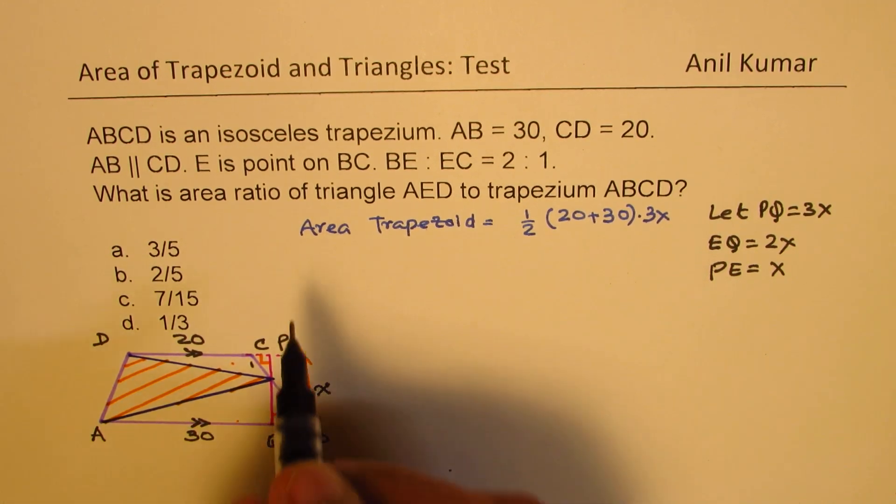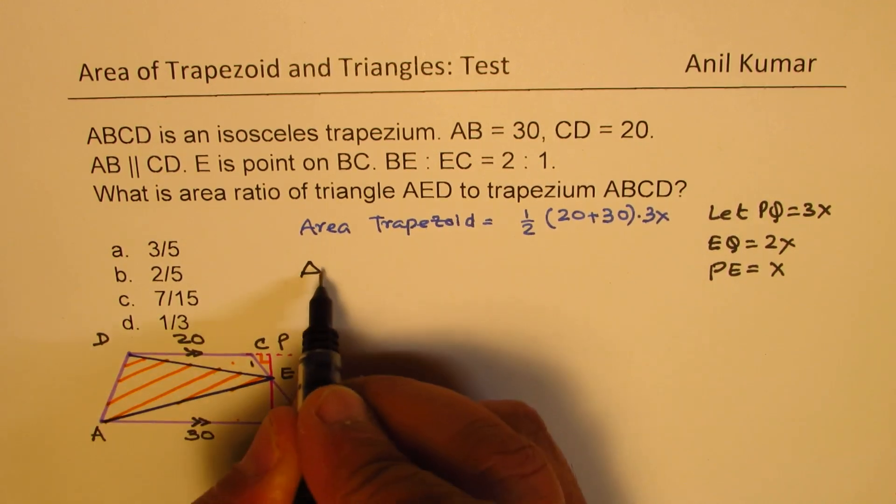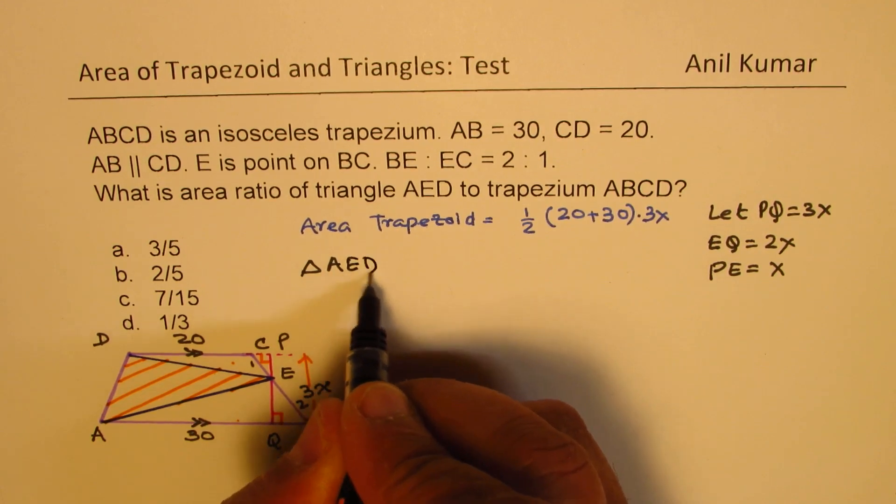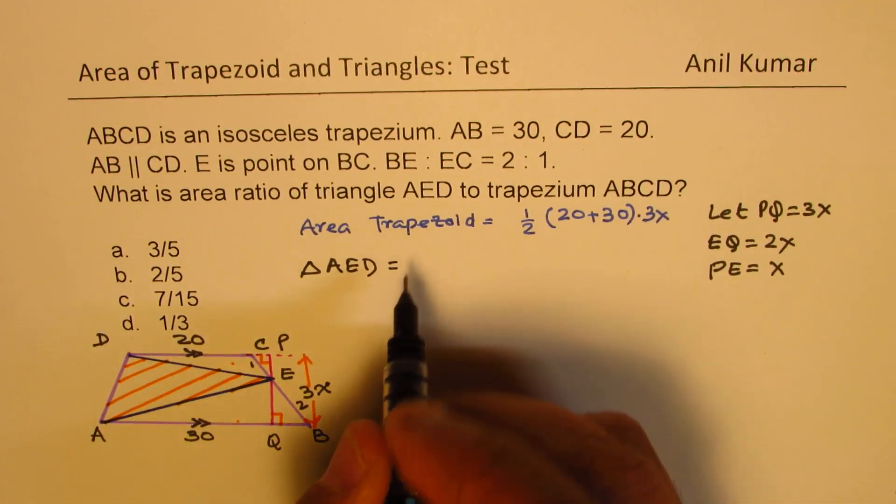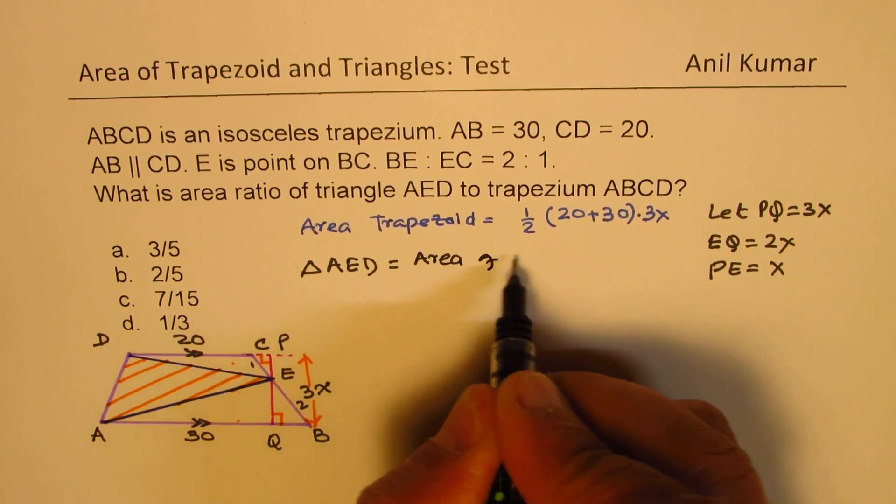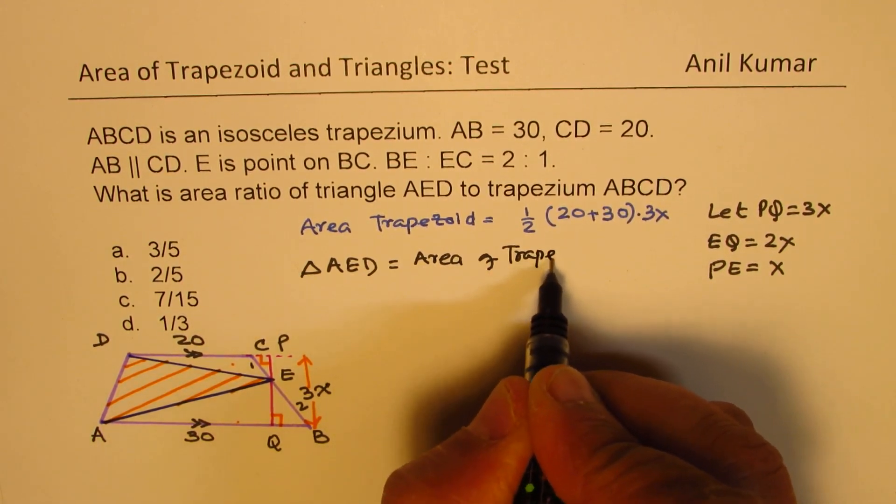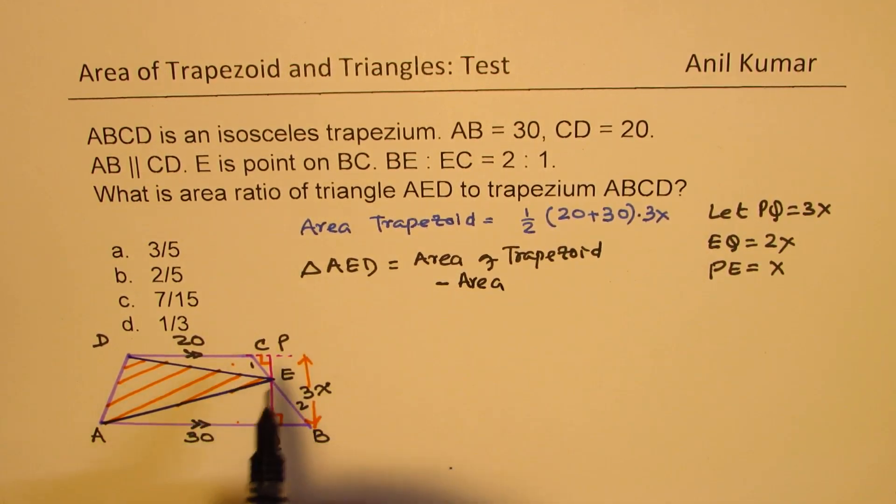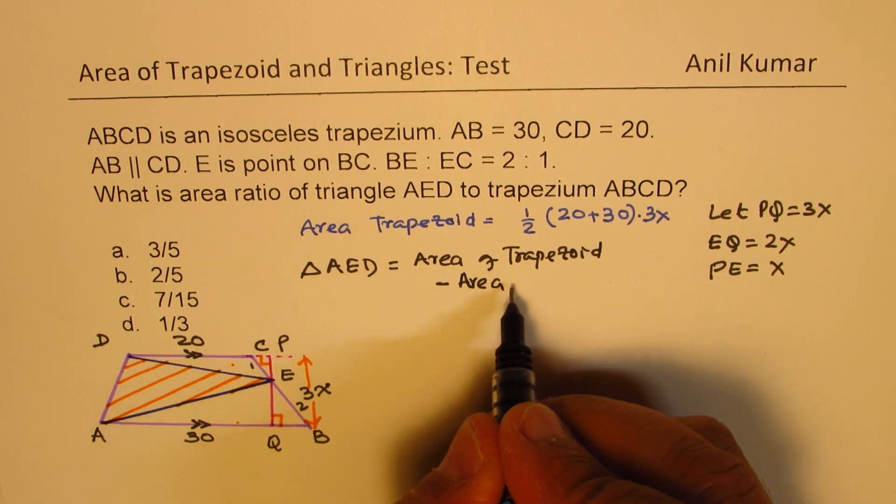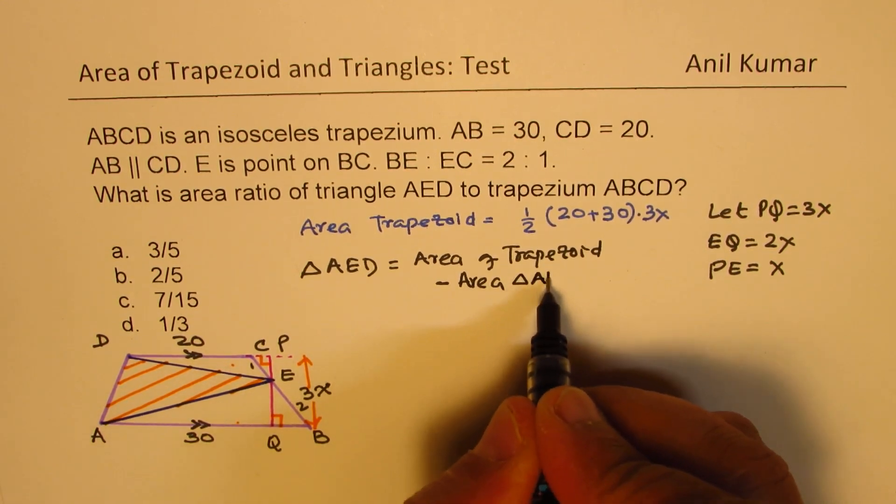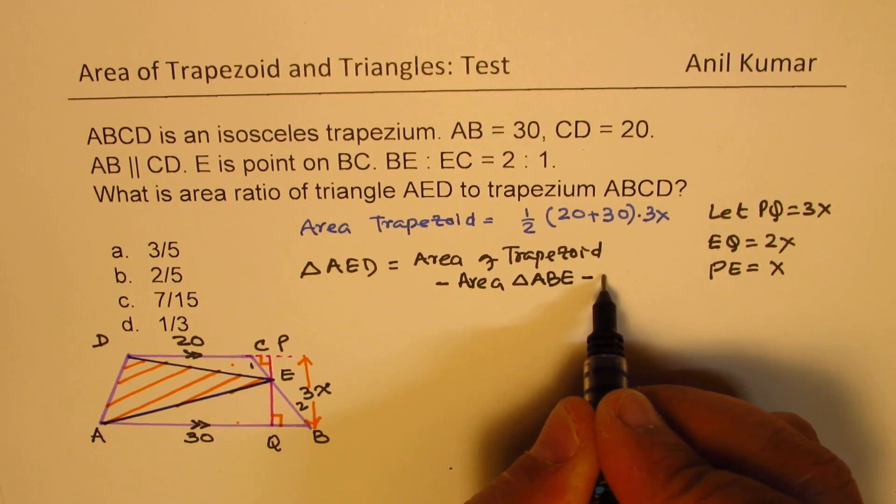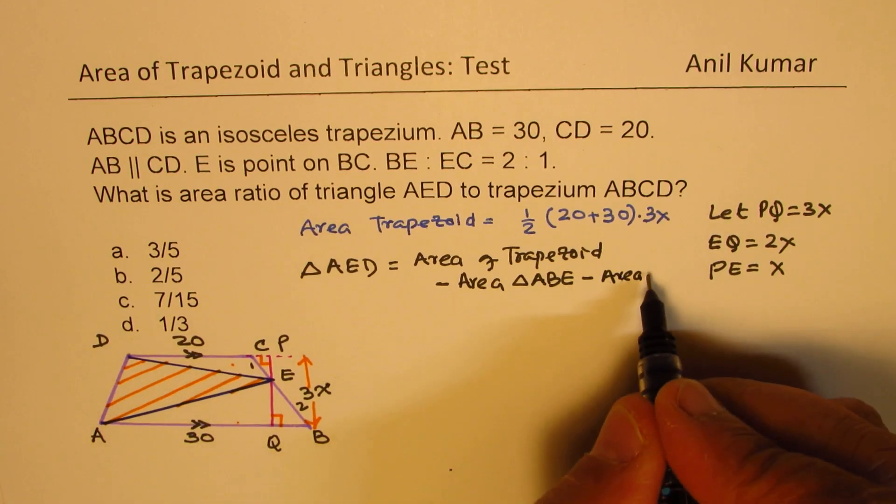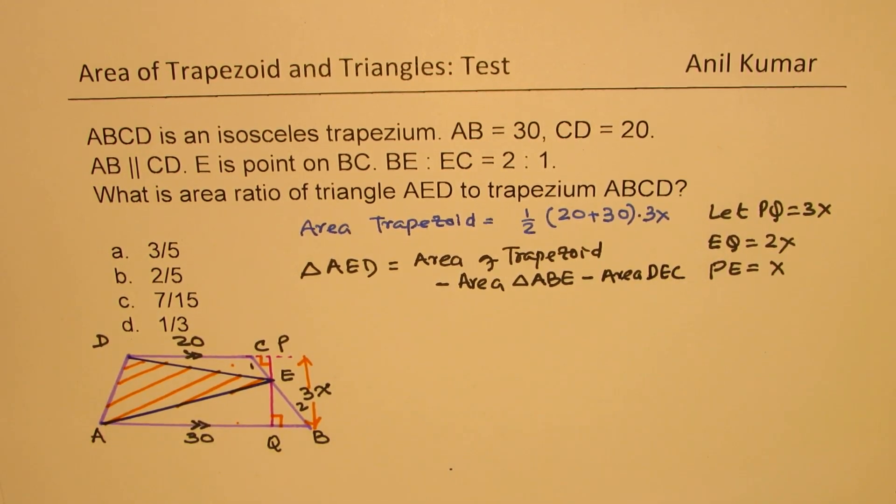Okay, so that's what we are going to do. So we are saying that the triangle area of this triangle is equal to area of trapezoid minus area of triangle ABE minus area of triangle DEC.